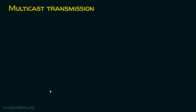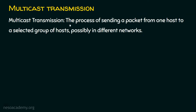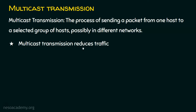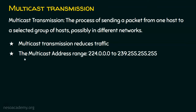Coming to the last transmission type, which is multicast transmission. In a multicast transmission, it is the process of sending a packet from one host to a selected group of hosts, possibly in different networks. It is not going to send the packet to all participants; rather, it sends information to a group or some selected participants. Broadcast always floods the network, whereas multicast reduces the traffic. Class D is for multicast purpose, and the multicast address range is from 224.0.0.0 to 239.255.255.255. If the first octet is between 224 and 239, it is Class D — meaning it is a multicast address.